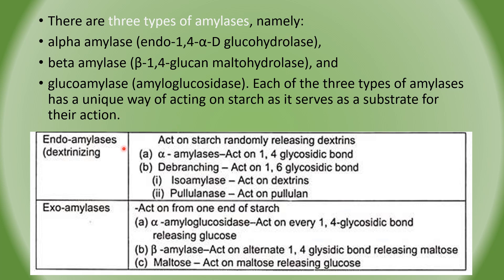Amylases are categorized into two classes: endoamylases and exoamylases. Endoamylases act on starch randomly, releasing dextrins, which are low molecular weight carbohydrates formed when the long chain of starch is broken in between due to hydrolysis. There are two types of endoamylases: alpha amylase, which cleaves alpha-1,4-glycosidic bonds, and also isoamylase and pullulanase. Exoamylases react from one end of the starch and include alpha-glucosidase, beta amylase, and maltase.